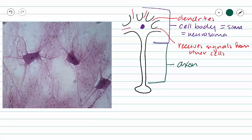And this is where we see our conductivity coming in. So our signal travels down our axon and arrives at our synaptic bulb, where neurotransmitters are released to travel across a synaptic gap and stimulate the next cell.